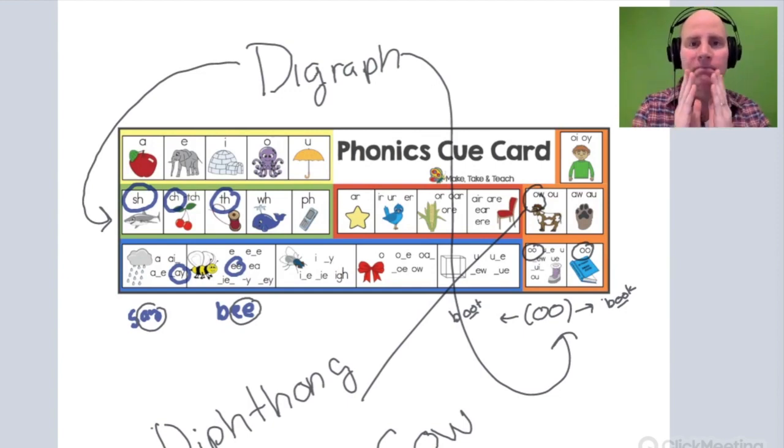Now try and say it without moving your jaw, your throat, and your tongue. OW. You can't, right? So a diphthong is when there's a blending of sounds and you'll notice an adjustment in your jaw and your tongue and your throat.